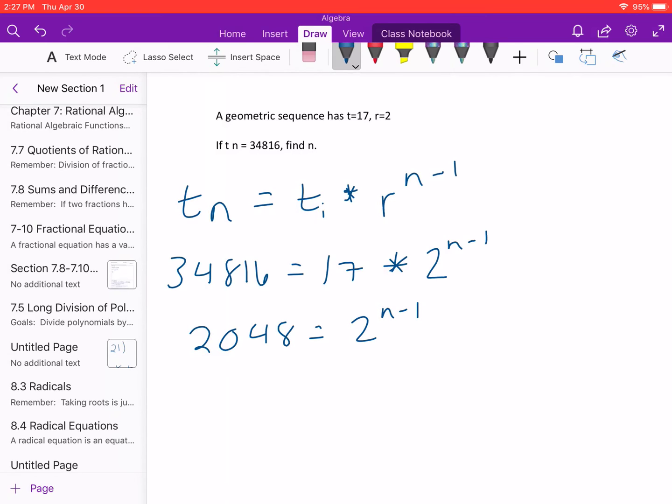So now we have to do our logs, which you guys are all experts in. If we take the log of both sides, we're left with the log of 2048 equals n minus 1 times log of 2.